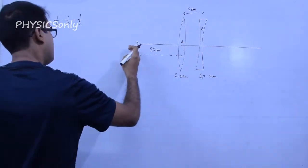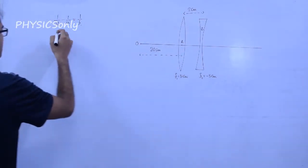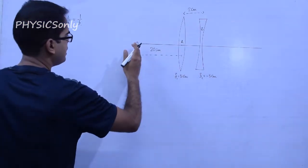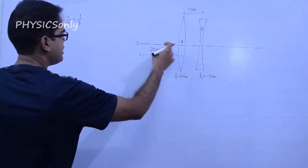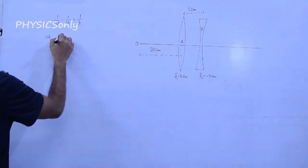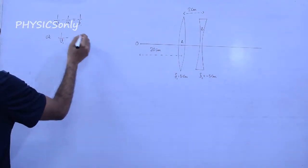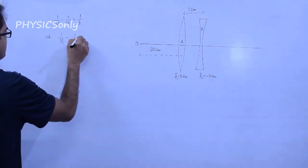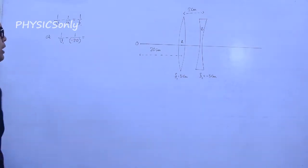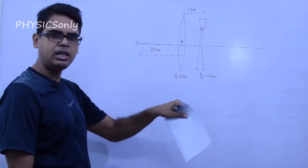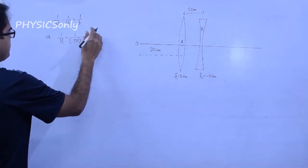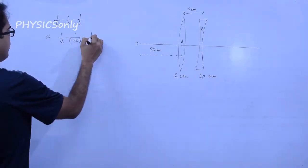Using sign convention, U1 is negative — it is on the front side of the lens. So U1 equals minus 20 cm. F1 is positive because this is a convex lens, so F1 equals plus 5 cm.